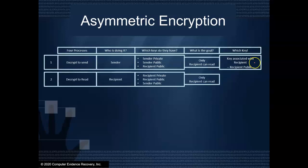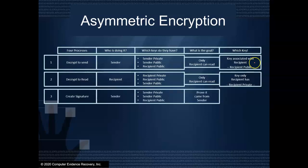So let's look at process number two. You want to decrypt a message to read it. Well, it's the recipient that's going to do this, and they have their public and private key, and they have the sender's public key. So only the recipient can read it. That's what we're trying to achieve. Which key will we use? Well, we have to use a key that only the recipient has. That's going to be the recipient's private key.